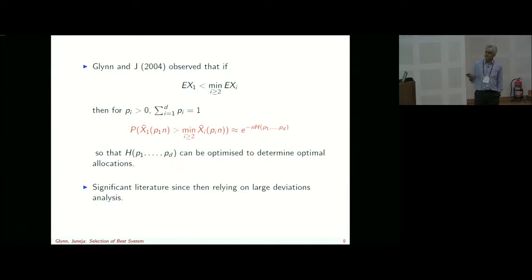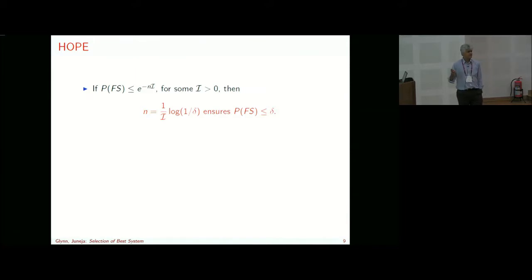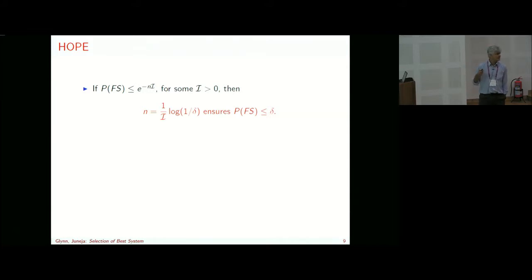There is significant literature since then relying on this kind of large deviation analysis — one can do elegant analysis with nice convex functions. The key hope is: suppose the probability of false selection is upper bounded by something decaying exponentially with large deviation rate I. Then you need only log(1/delta) samples scaled by 1/I. If you choose n this way, your probability of false selection will be less than delta. The hope is to estimate the rate function I, plug it in, and get log(1/delta) order convergence rates — but this relies on estimating I from generated samples.